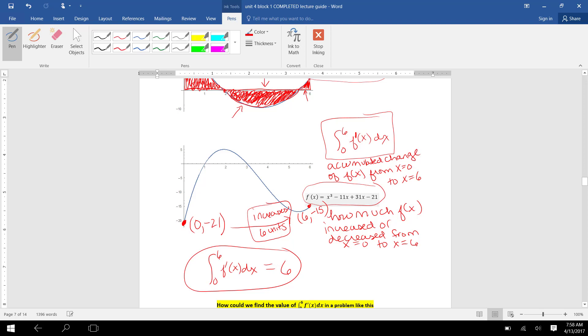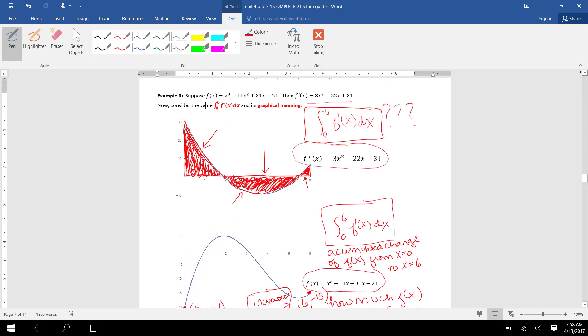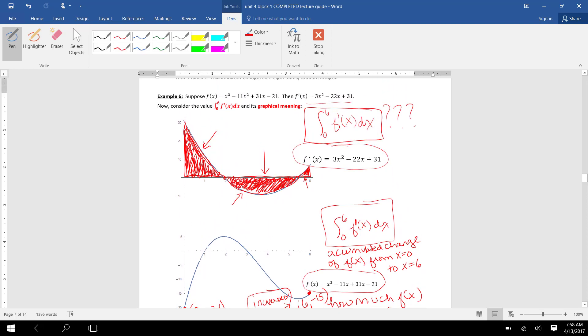I've learned that the integral from 0 to 6 of f prime of x dx is 6. f of x increases 6 units on this interval. If I had a method for finding these areas up here between f prime of x and the x axis, all of this would add up to 6.